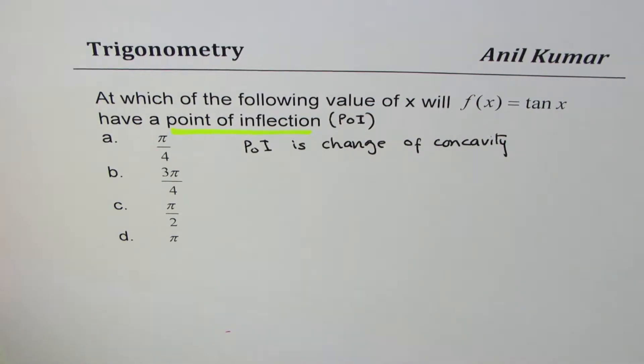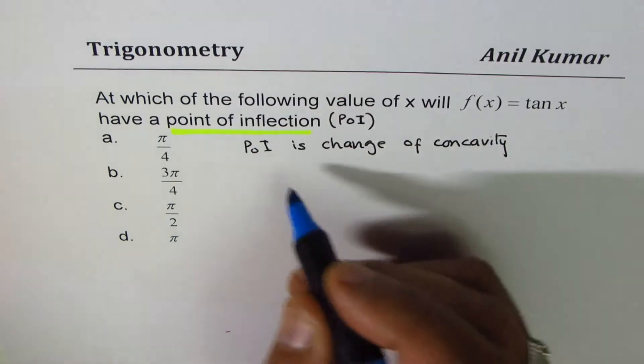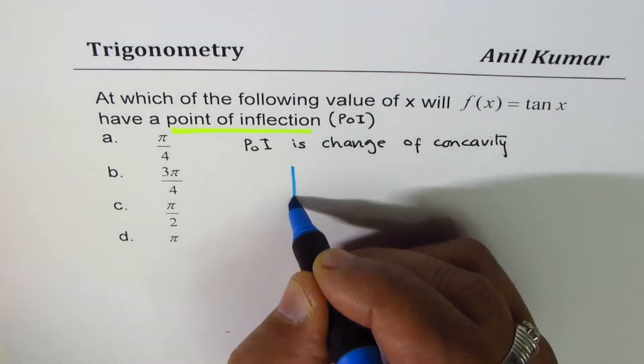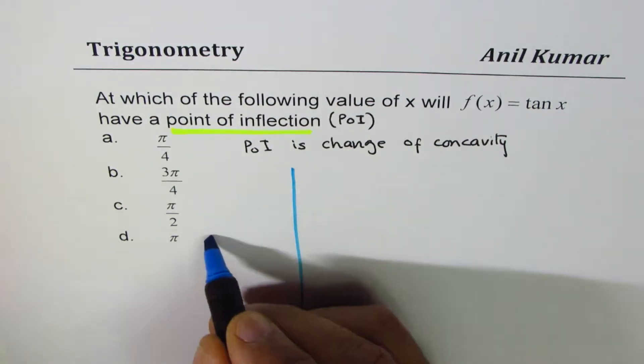So that is what it is. You can always pause the video, answer the question, and then look into my suggestions. So here is a basic solution. What I do here is I'll kind of sketch the function itself which is tan x.